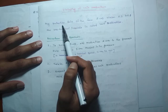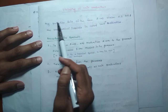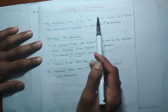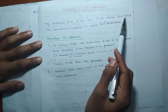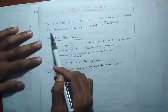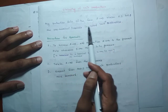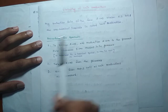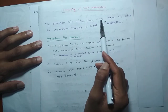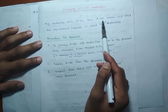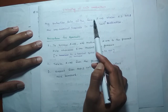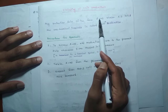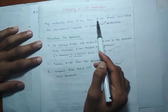So actually, what is unit production? Any production rule of the form A derives B, where A and B are both non-terminals or variables, is called unit production. That means a unit production is in the form of A derives B, where the left-hand side and right-hand side each have one variable.